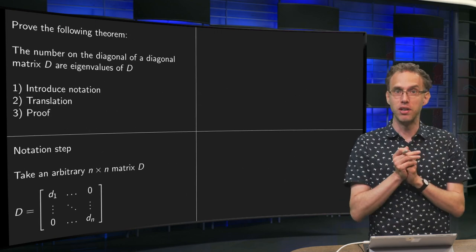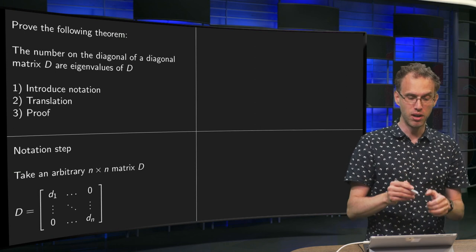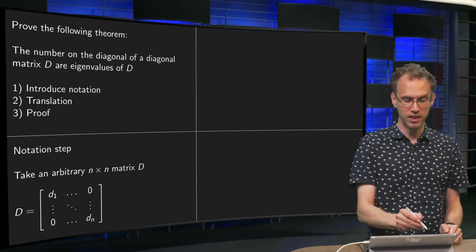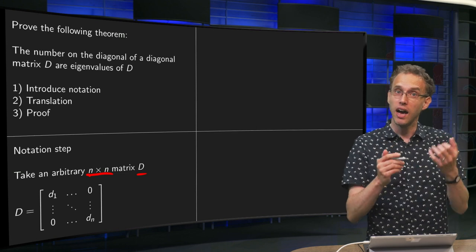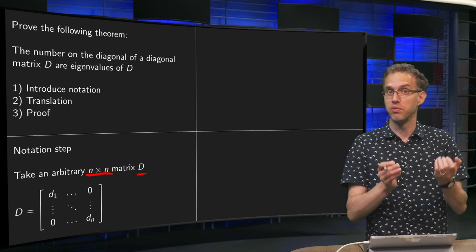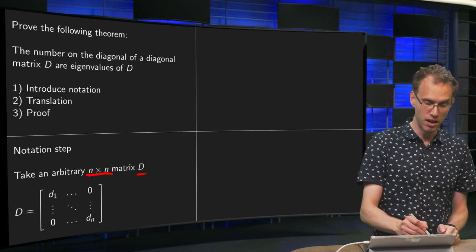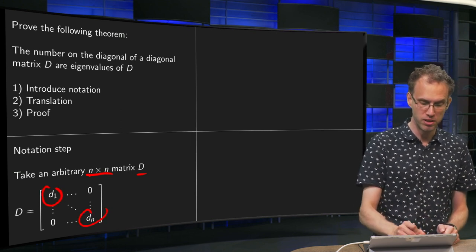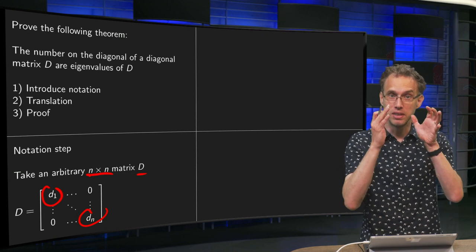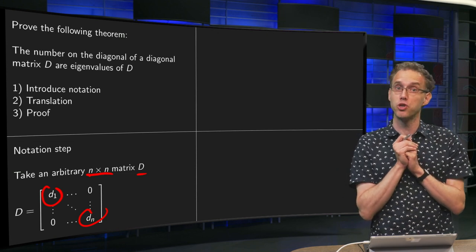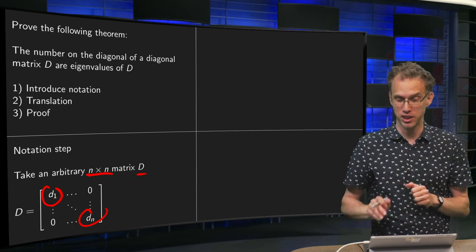We are talking about matrix D, so it's convenient to say we have an arbitrary n by n matrix D. Then we give the numbers on the diagonal of the matrix a name. We say our matrix D has numbers d₁ up till dₙ on the diagonal. That is the matrix we are talking about, an arbitrary n by n matrix.